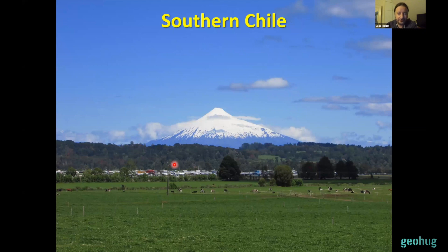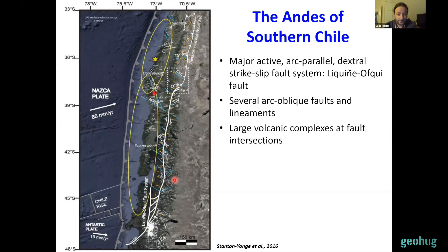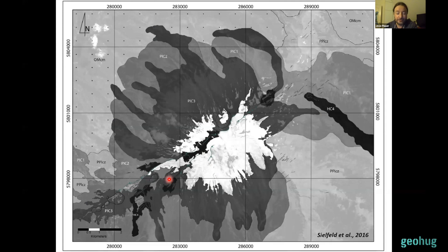Now I want to show some work on the relationship between fault systems and magmatic hydrothermal activity in southern Chile. This area has no porphyry deposits but beautiful volcanoes, lakes and forests, and it's very interesting for studying this topic. In this area there is a major arc-parallel strike-slip fault system — the Liquiñe-Ofqui fault — which follows the axis of the active magmatic arc. The largest volcanic complexes are built where this arc-parallel fault system intersects arc-oblique faults shown here in light blue. One example is the Cayaki volcanic complex, where the volcanic complex, distribution of individual vents, and orientation of feeder dikes all suggest a structural control provided by a northeast-striking fault.